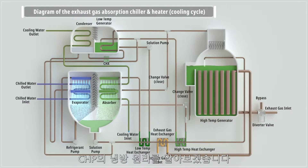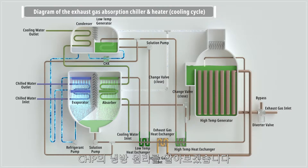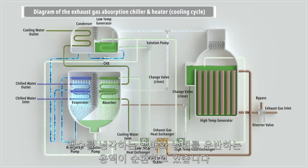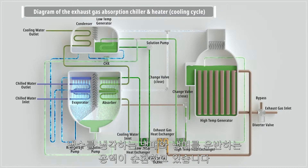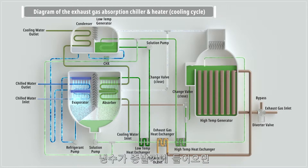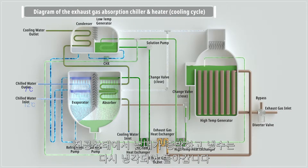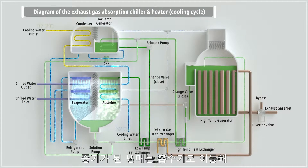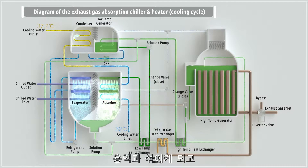Inside the CHP chiller, refrigerant that cools down the inlet water is circulated by the LiBr solution. After being used in cooling, chilled water flows through to the evaporator where refrigerant evaporates, and chilled water returns to the system. Vaporized refrigerant flows through to the absorber where it is mixed with the LiBr solution.